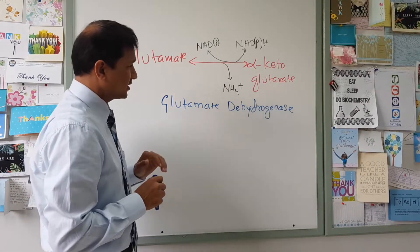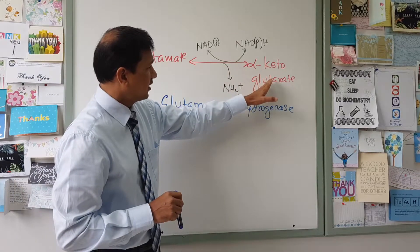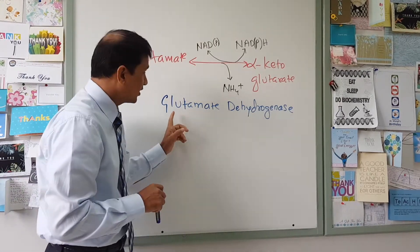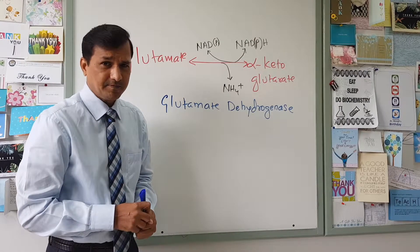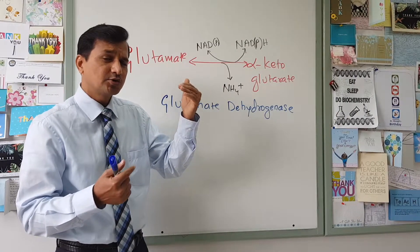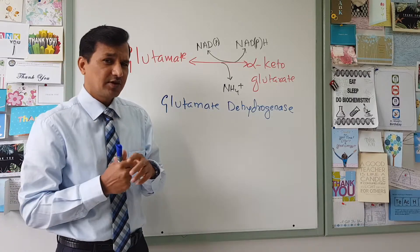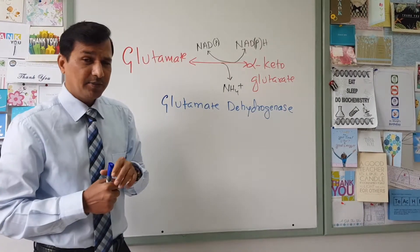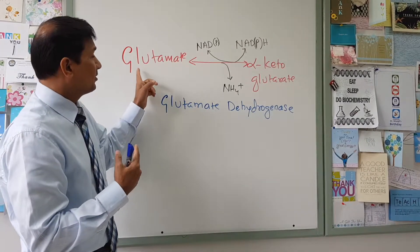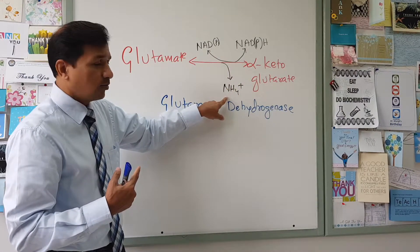Glutamate dehydrogenase also conducts a reversible reaction, where glutamate can be broken down into alpha-ketoglutarate and ammonium ion. The majority of the time in the liver, this is the reaction being conducted. During transamination, amino acids give their amino group to alpha-ketoglutarate, which becomes glutamate. So the amino groups of most amino acids are carried as glutamate, and when glutamine arrives in the liver it is broken down to glutamate, which is then broken down into alpha-ketoglutarate with release of ammonium ion.